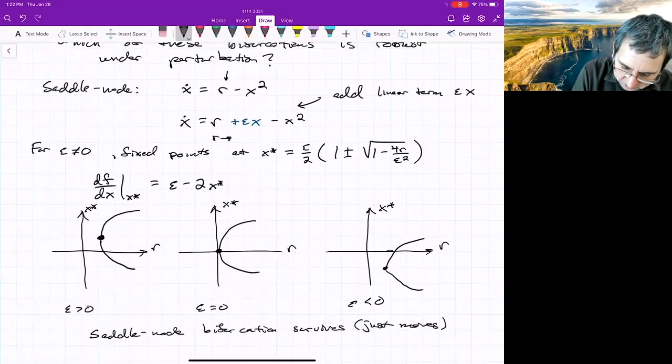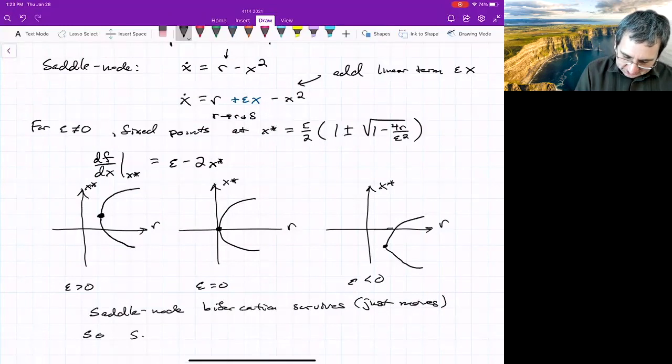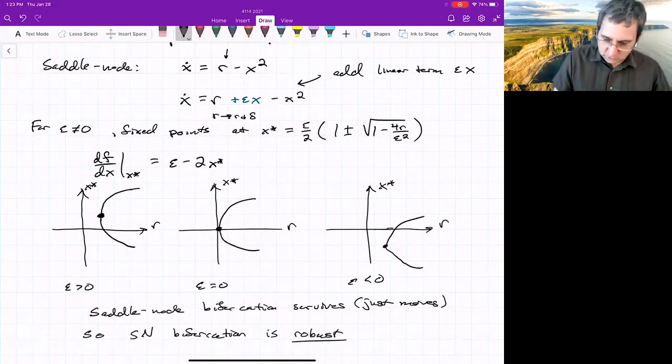You might say, well, why didn't we go from r to r plus something? Because that would just basically be shifting where that happens. So we could say, so the saddle node bifurcation, another way to say if something survives is you could say it is robust.